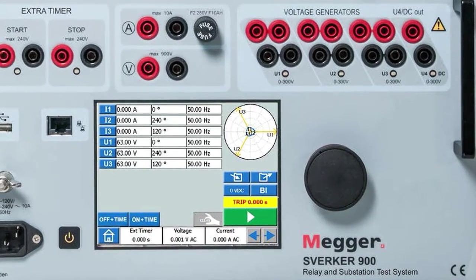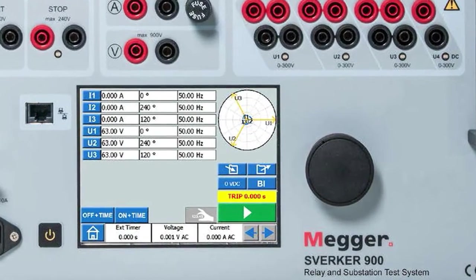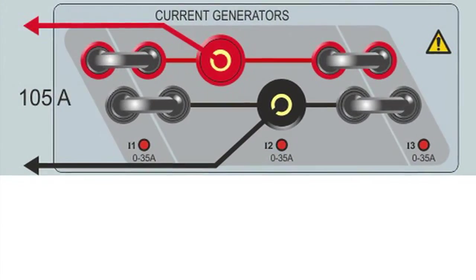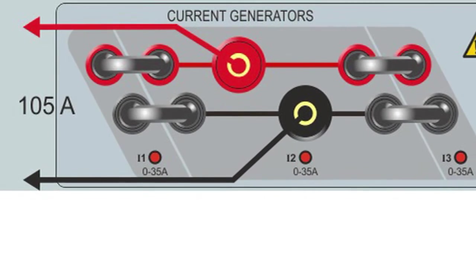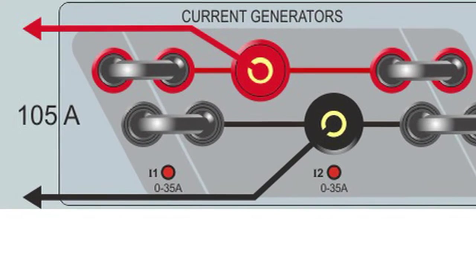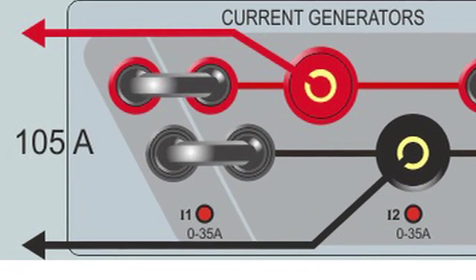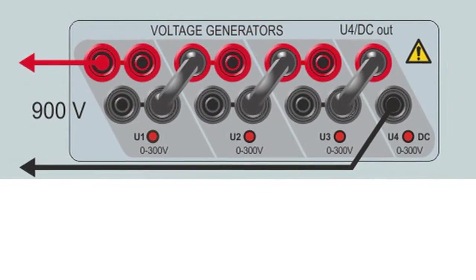The Sverker 900 is specifically designed for basic manual three-phase secondary testing of protection devices. In addition, various primary testing can be performed since the current and voltage sources can be series and/or parallel connected to allow for up to 105 amps AC and 900 volts AC output.